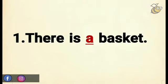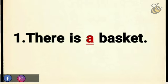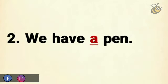My first example is, there is a basket. In this statement, basket is the noun and it is starting with a consonant sound and it has no specific identity. So, we have used a here. My next example is,